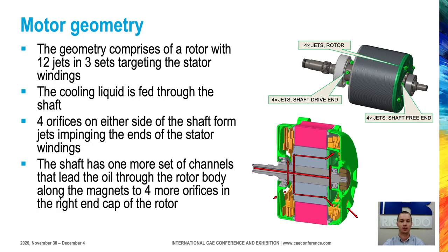To make clear what we are talking about, let's have a look at the geometry of the motor we were investigating. There are three sets of nozzles of 4, so 12 nozzles in total: 4 on one side and 8 on the other side. Looking at the cross-section, we have oil fed from the left side through the shaft. There is a first set of 4 nozzles here, then channels through the rotor going to the other side with another set of 4 nozzles on the right side — so 8 jets for the right side and 4 jets for the left side.